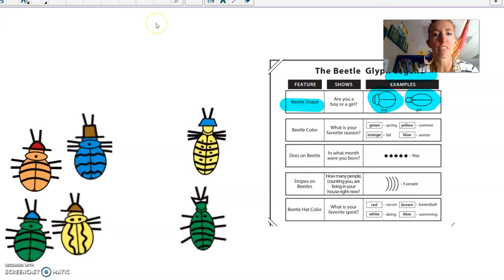Are there different ways we could sort? Of course there are. We could have sorted by beetle color. We could have sorted by the number of dots on the beetle. We could have sorted by the stripes on the beetles or the beetle's hat color. Okay? Many different ways to sort.